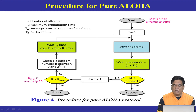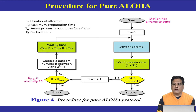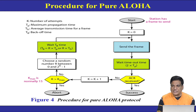How does Pure ALOHA work? If a station has a frame, it sets k=0 and sends the frame. After sending, the station waits a timeout of 2×tp. This is because one tp is used for sending the frame and the second tp is for waiting to receive the acknowledgement, to know whether the receiver received the frame successfully or not. That is why the timeout is 2×tp. After 2×tp, if an acknowledgement is received, the frame was successfully received.